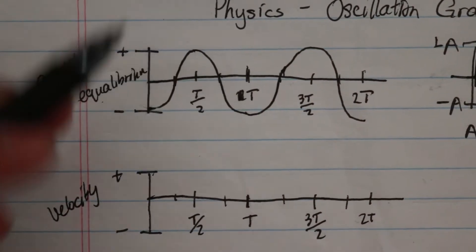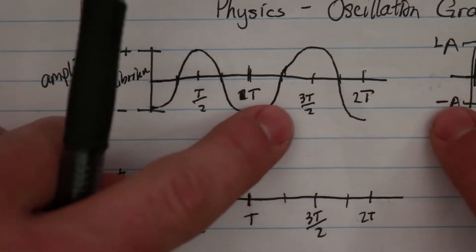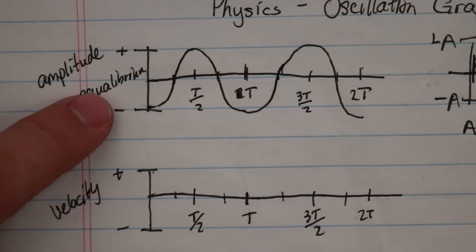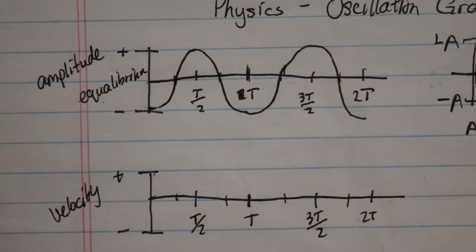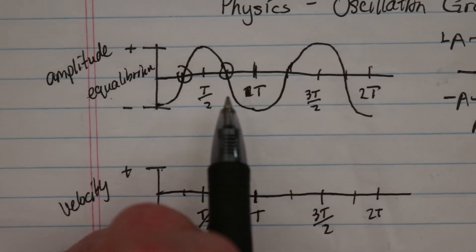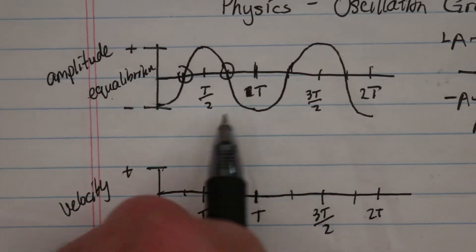But for our period, let's look. We start at the same spot, so this one to this one, they are the same. So this T is one period. So what are some landmarks here? First is the point of equilibrium. This point of equilibrium is when this line is going to intersect at zero, basically.